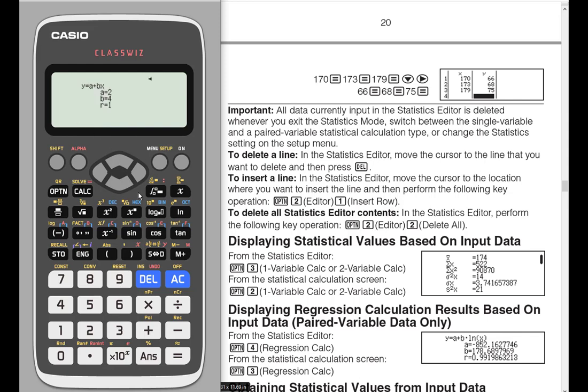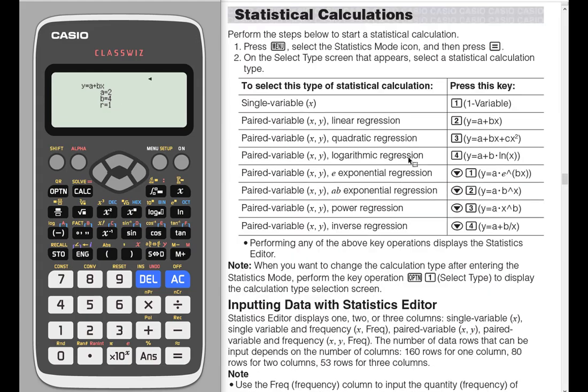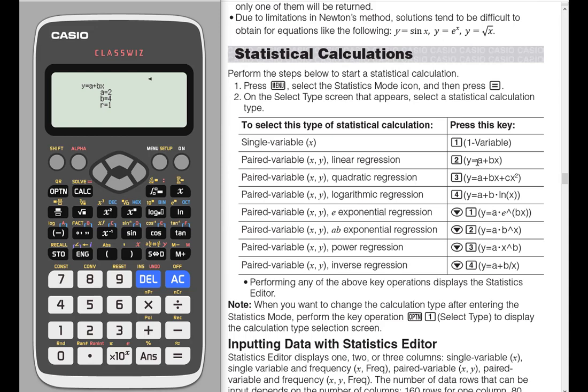So I'm going to hit number 3, and it does it automatically. There's my A, there's my B, and there's my R value. And so if I'm scrolling back up here, I now have the regression, which is 2 plus 4x. And it's got an R of 1, which means it's pretty good.